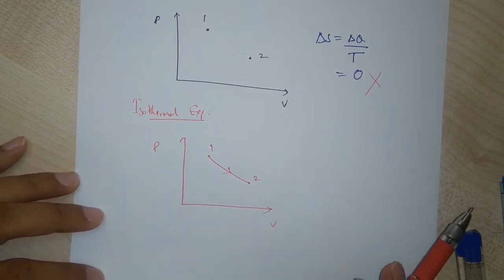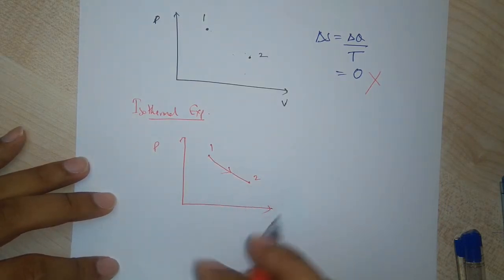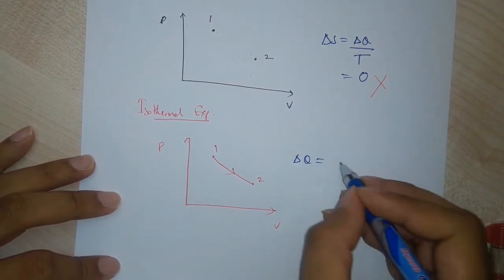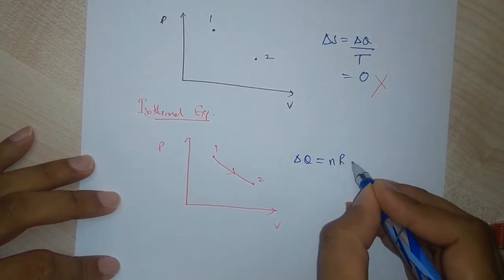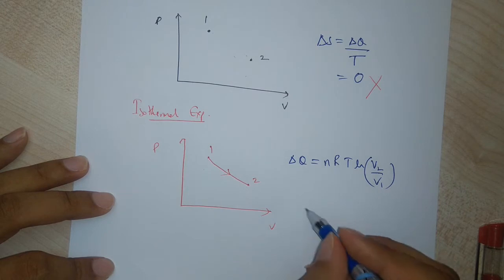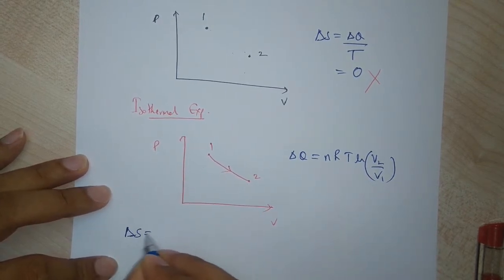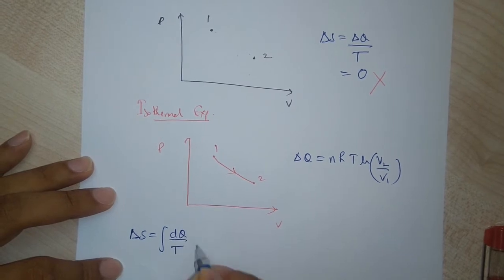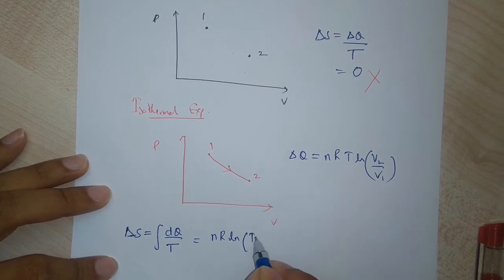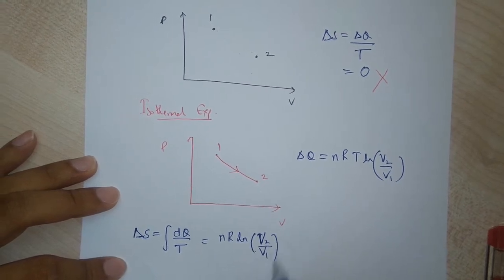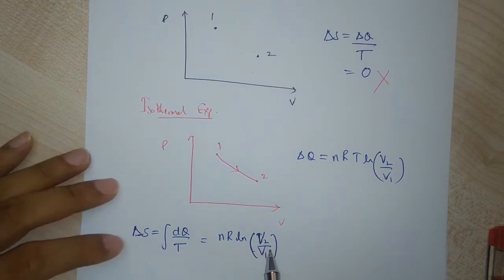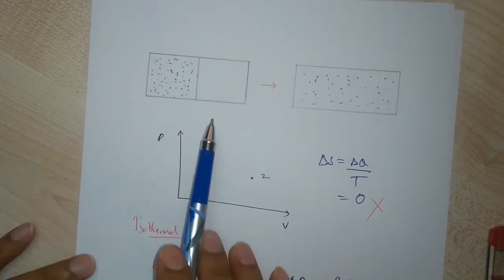For an isothermal expansion from state one to state two, the heat supplied equals nRT ln(V2/V1). Since temperature is constant, the change in entropy equals the integral of dQ/T, which gives nR ln(V2/V1). This is the change in entropy for the free expansion as well.